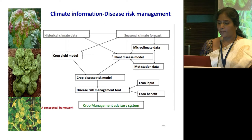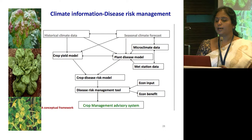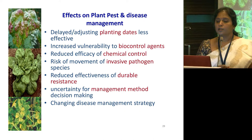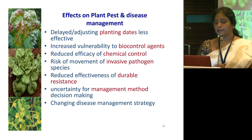This conceptual framework shows how climatic data can influence diseases, which can be modeled and used to draw management advisory systems. The effects on plant disease management include: delayed or adjusted planting dates, increased vulnerability to biocontrol agents, reduced efficacy of chemical control, risk of movement of invasive pathogen species, reduced effectiveness of durable resistance, and uncertainty for management methods and decision making. Changing disease management strategies are expected with changing climatic conditions.